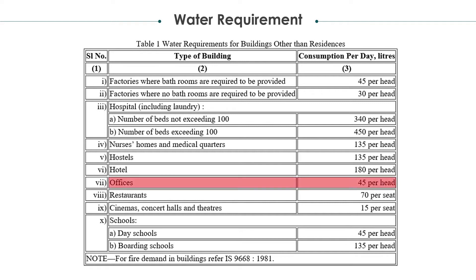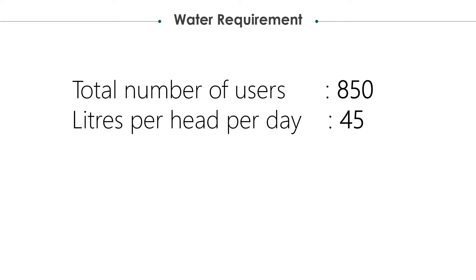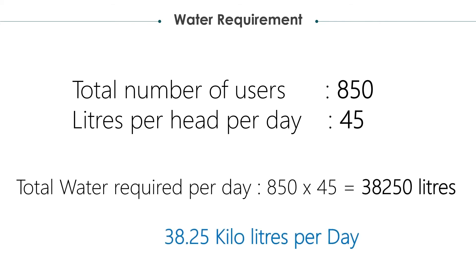For every office building, 45 liters of water is required per head per day. Total number of users are 850 members. Liters per head per day to be allocated is 45 liters. Multiplying both, we get 32,250 liters per day, which is 32.25 kiloliters per day.